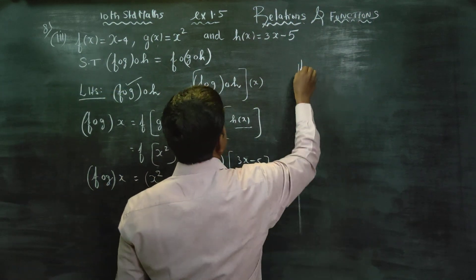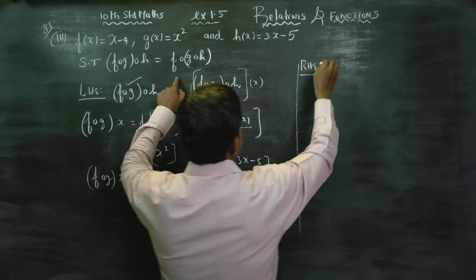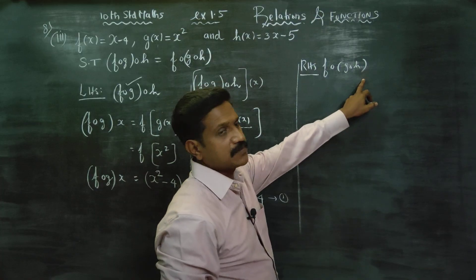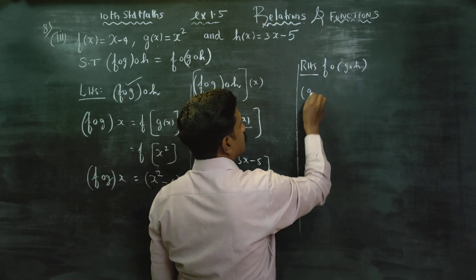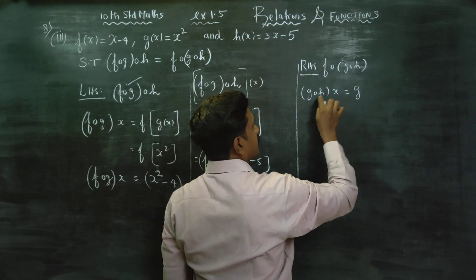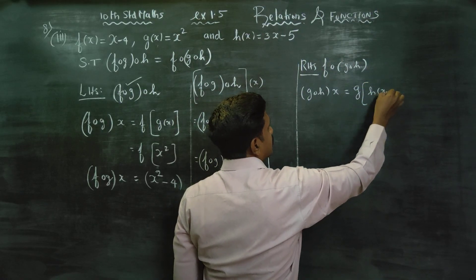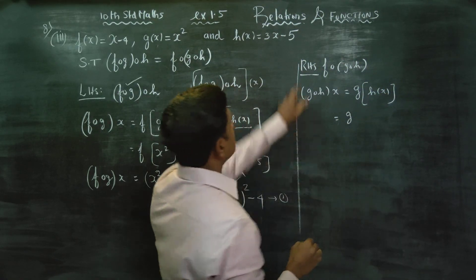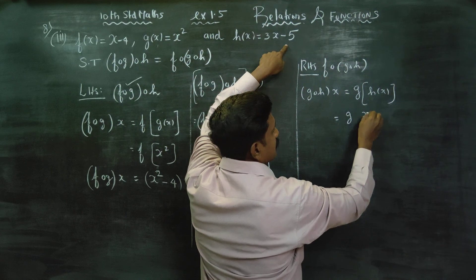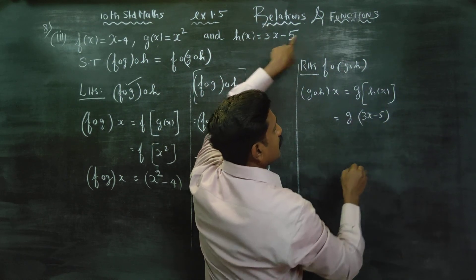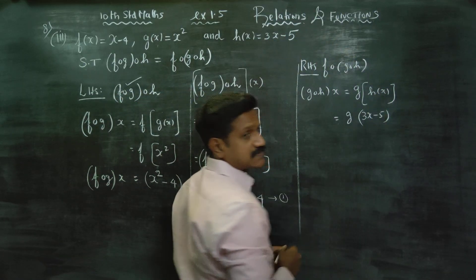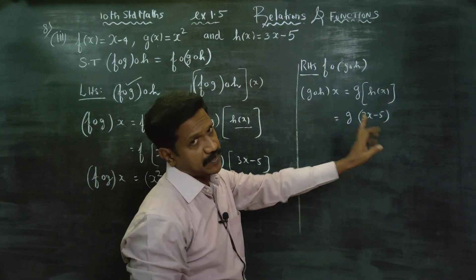Coming to the RHS, what is my RHS? f.g.h. First find g∘h. Give x to g∘h. g∘h: connect g and h — give x, whatever comes in, multiply by 3 and minus 5. So for any input x, h gives 3x minus 5. That is h's work: for any x, multiply by 3 and minus 5.